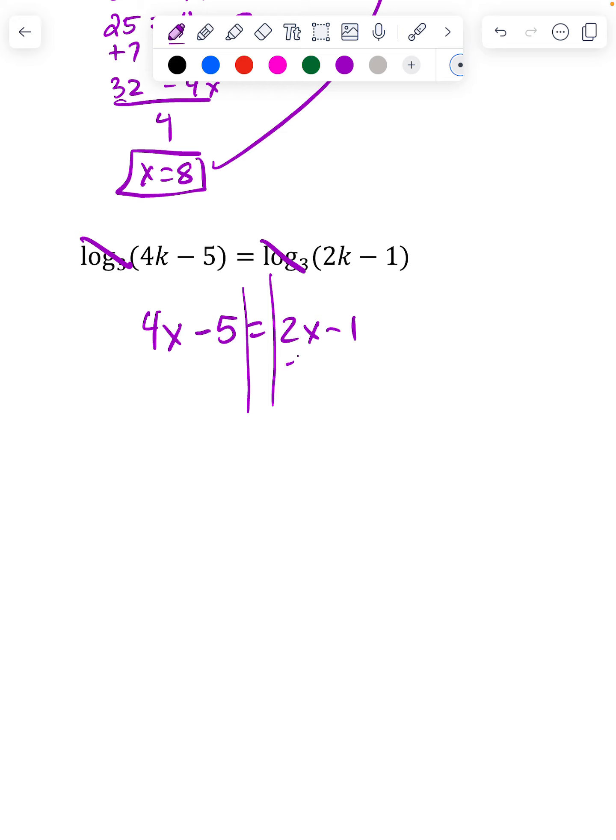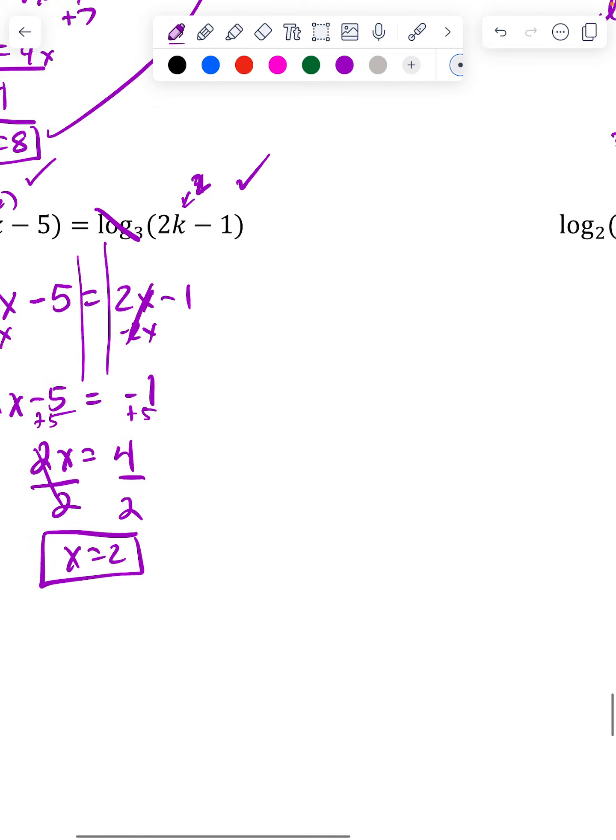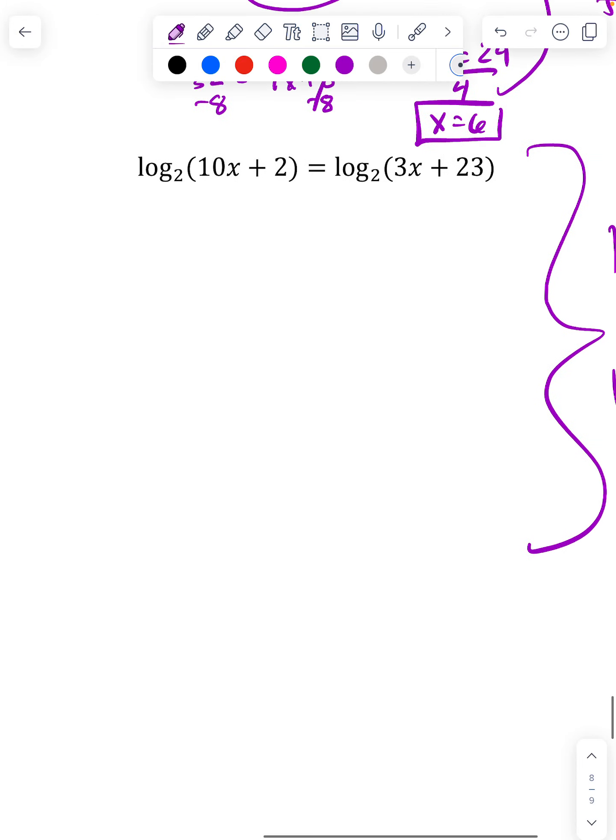And I'm going to go ahead and solve that. I'm going to move all my x's to one side. 2x minus 5 equals negative 1. Add 5 to the other side. I get this, and so easy, I get that x is 2. Here, if I put in a 2, I'd get 8 minus 5 which is 3, that's a positive number. Here, if I put in a 2, I get 4 minus 1 which is 3, so that's a positive number.